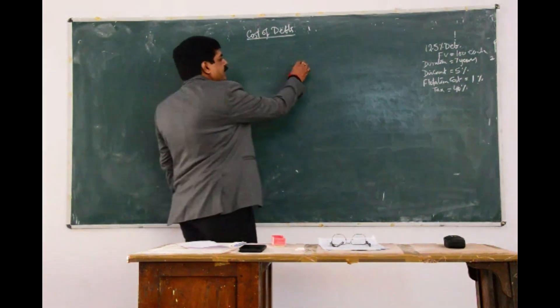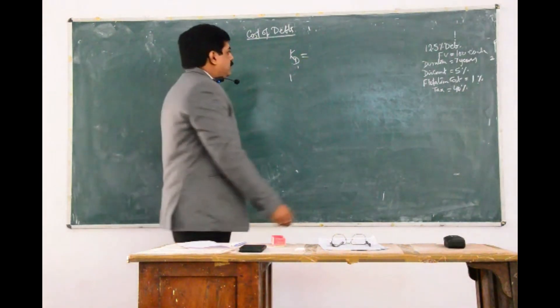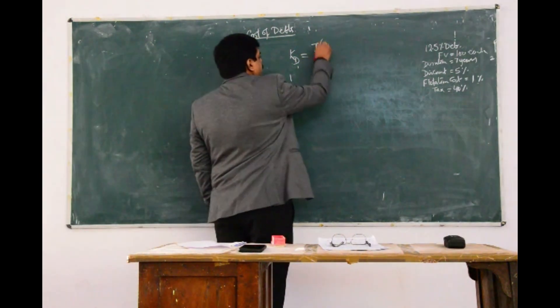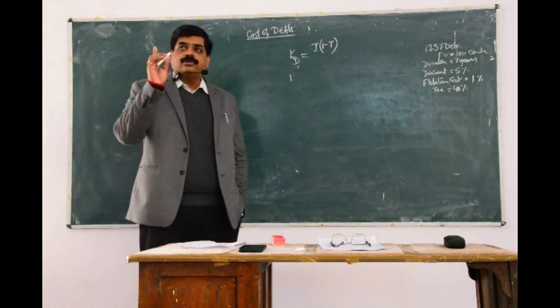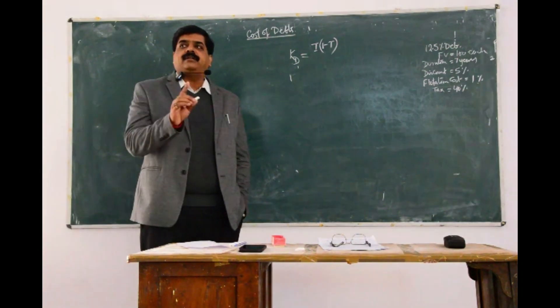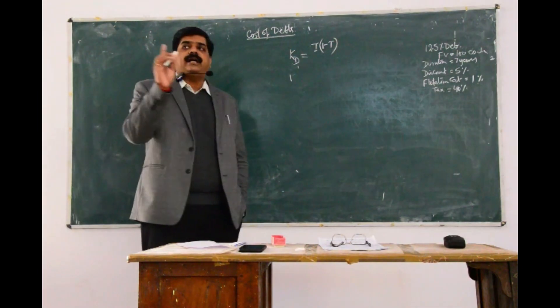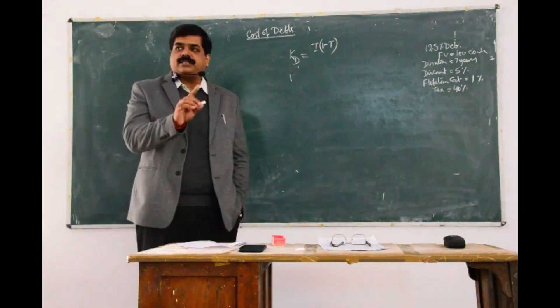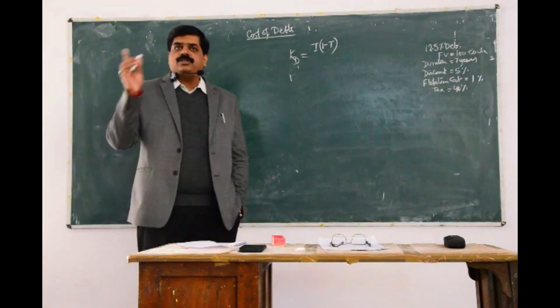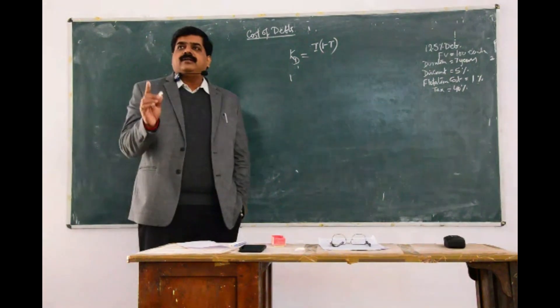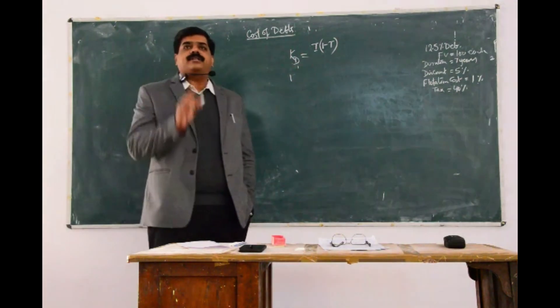We are supposed to calculate the cost of debts. The equation can be: cost of debts equals interest times (1 minus t), where t is the tax rate. As I said in the previous lecture, either the tax will be adjusted along with the interest, or you can adjust the tax after the calculation of cost of debts. Because you are aware that interest helps us in reducing our tax liability, and tax has to be adjusted in the interest amount.